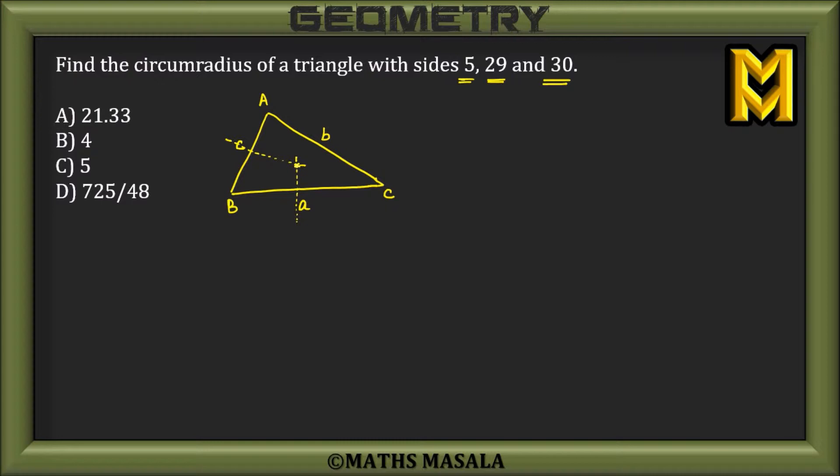so this would be the circumcenter of this triangle. Let's say this point is O. Let's join BO and CO. Let's join AO as well. Now, drawing the circle, I have a